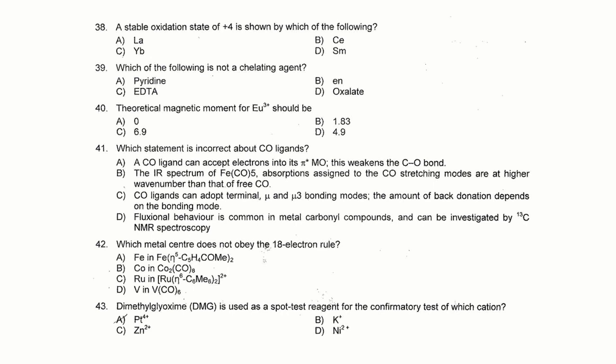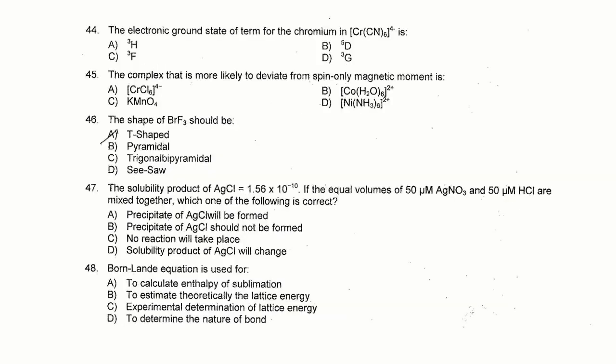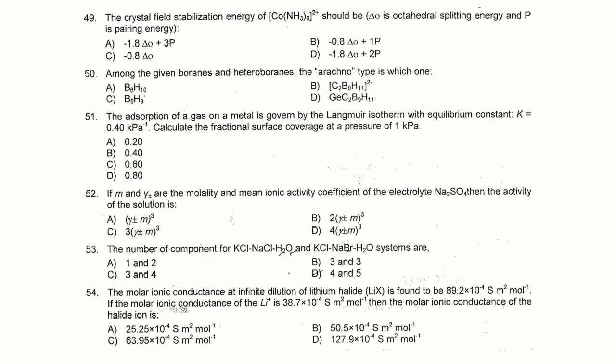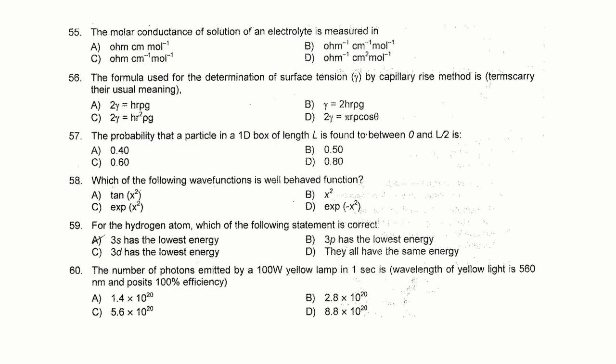MSC Chemistry questions — question numbers 38 to 43, multiple choice questions; each question has four options. Question numbers 44 to 48 you can see on this slide. I will also share the link to the question paper in the description of this video so you can download it and take a printout. Question numbers 49 to 54 are on this slide — all questions have four options.